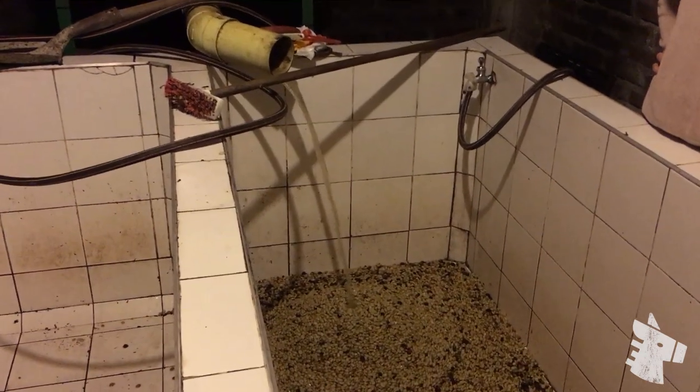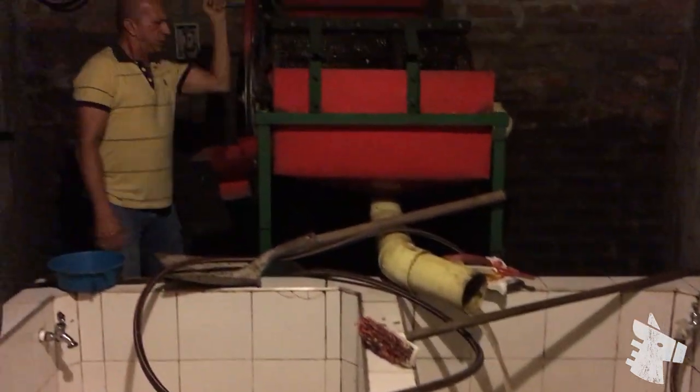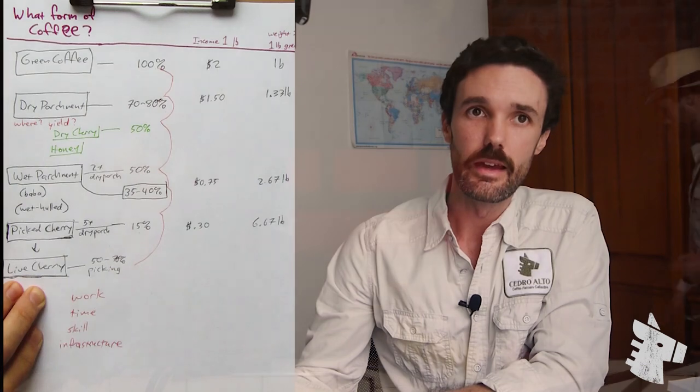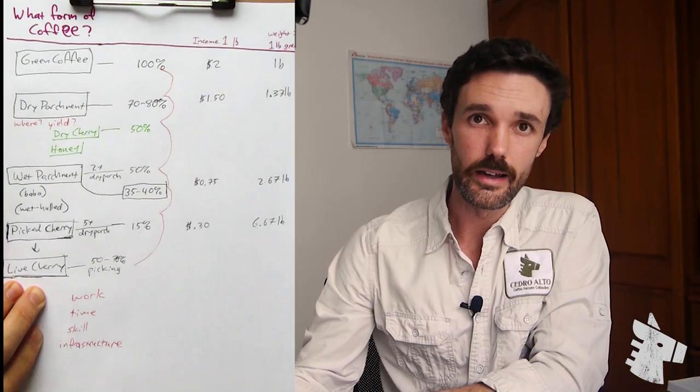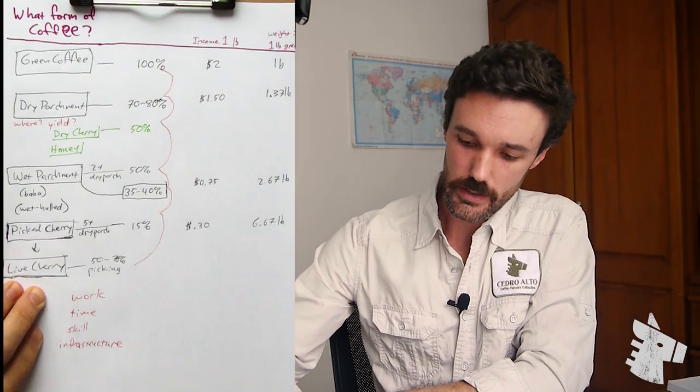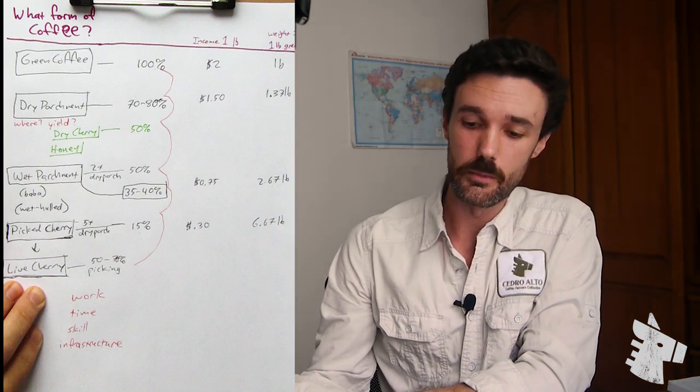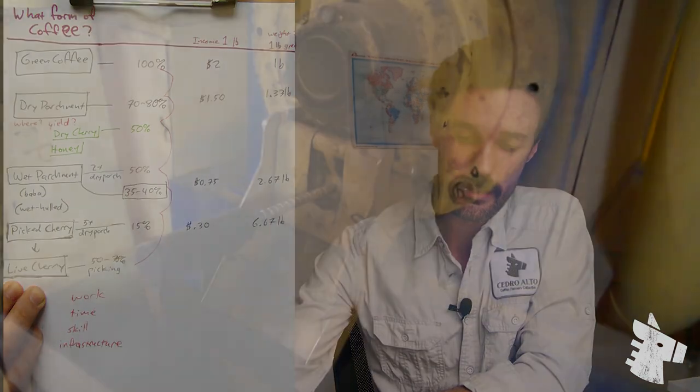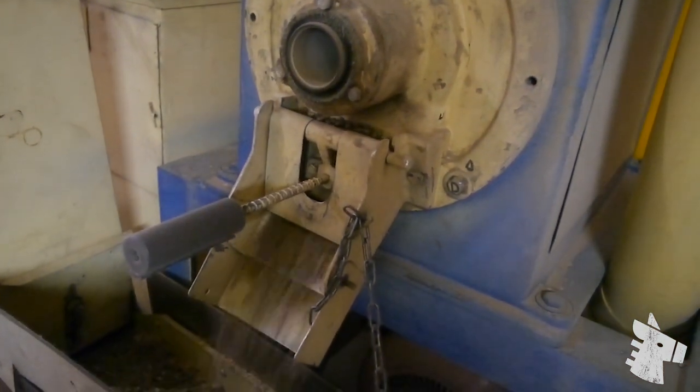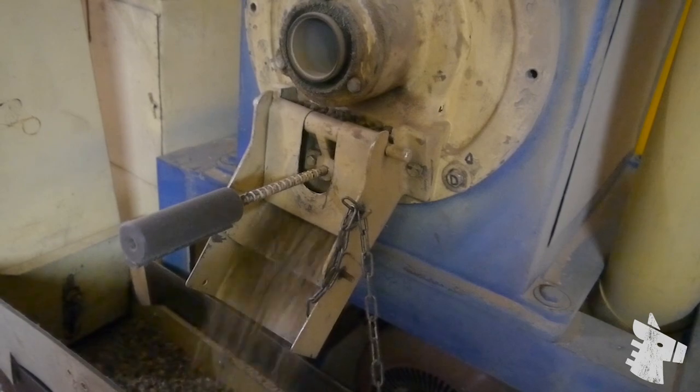Some of these processes require skill, especially wet milling, monitoring and knowing how to ferment coffee and dry coffee in a way that will lead to a high quality finished product, as well as infrastructure. These are facilities that someone needs to purchase and maintain, especially the dry mill, which needs to be quite large in order to be efficient and is quite costly.